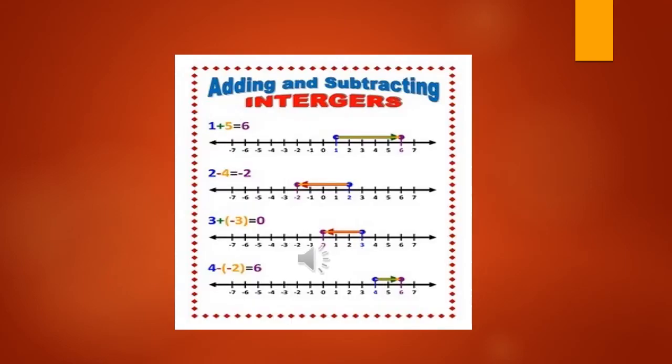Look at a few more examples of addition and subtraction of integers: 1 plus 5 equals 6; 2 minus 4 equals minus 2; 3 plus minus 3 equals 0; 4 minus minus 2 — minus minus becomes plus — so 4 plus 2 is 6.